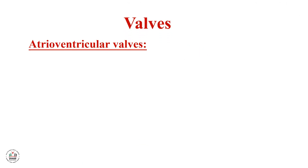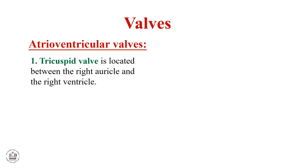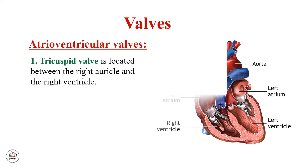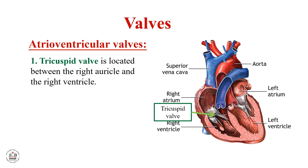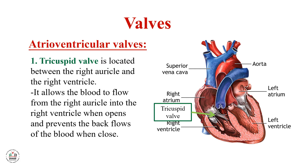Now we will talk about valves. Atrioventricular valves: the tricuspid valve is located between the right auricle and the right ventricle. It allows blood to flow from the right auricle into the right ventricle when open, and prevents the backflow of blood when closed.